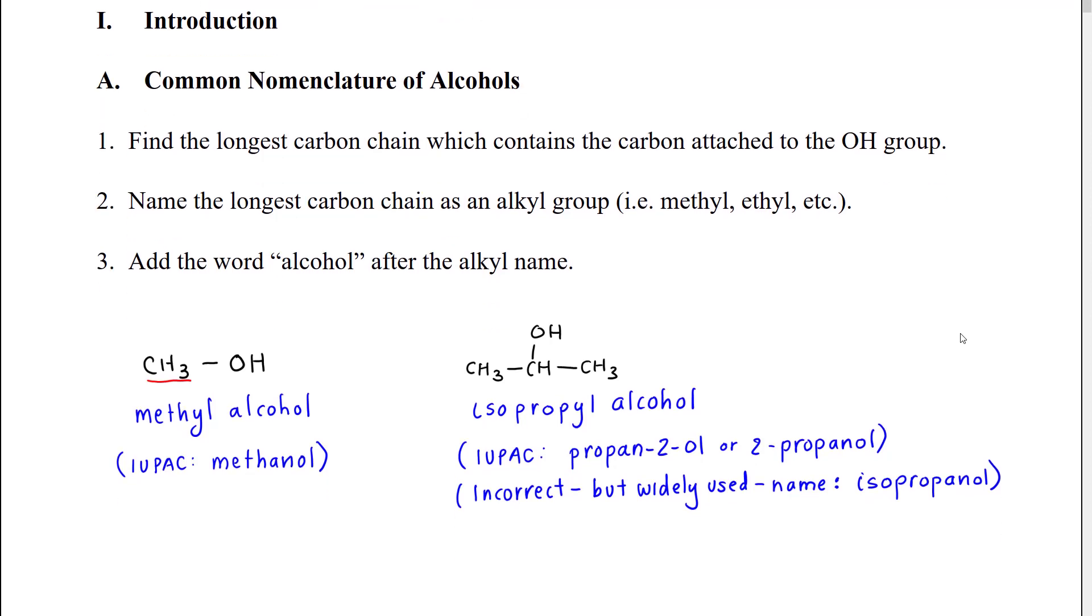The first thing we're going to discuss is the common nomenclature of alcohols. We've already covered the IUPAC nomenclature in an earlier chapter. There is a semi-systematic common nomenclature of alcohols which is still widely used for smaller alcohols and common industrial alcohols.